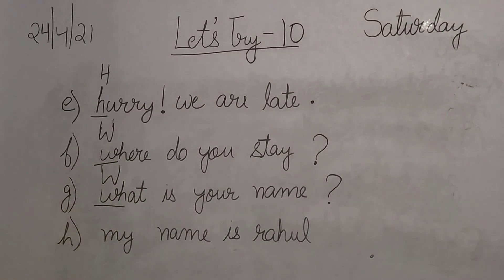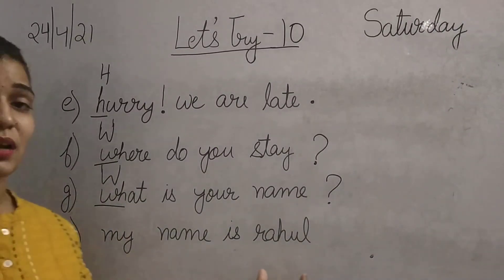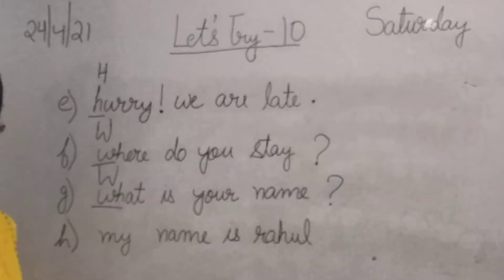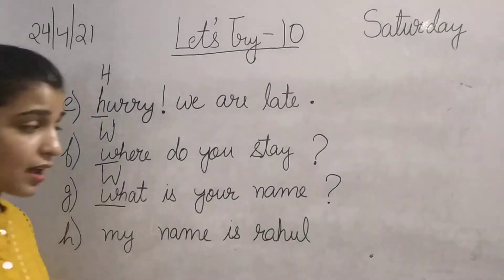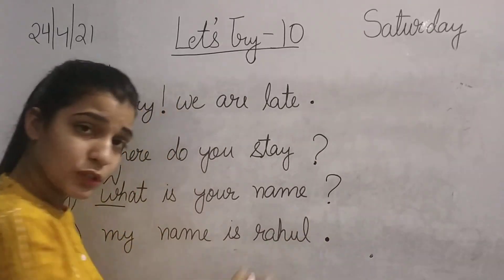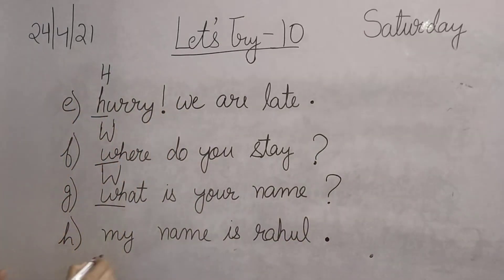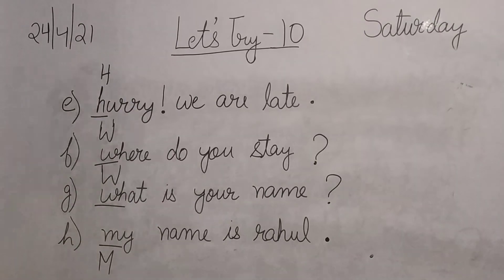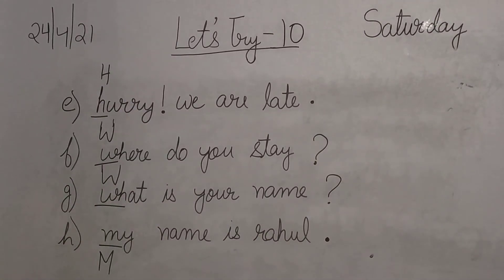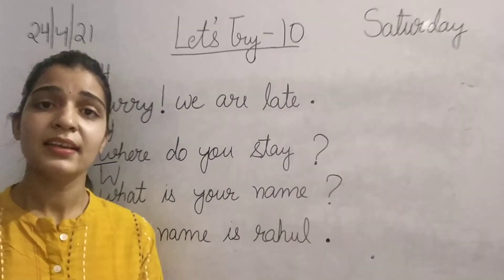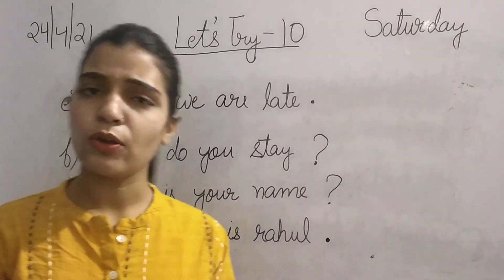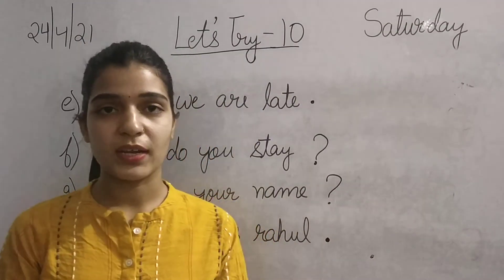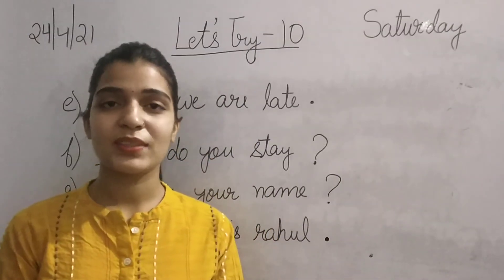The last sentence is: 'My name is Rahul.' Someone is giving the answer — no question is being asked, so we will put a full stop. And the first letter should be capital. So we have done Let's Try 9 and 10 today. I hope aap sabko samaj mein aaya hoga. That's it for today — we will see you in the next class.